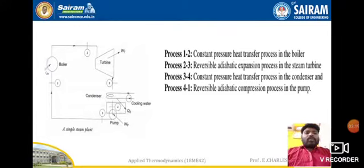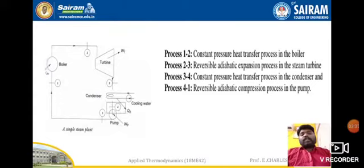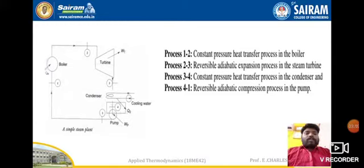The 2 to 3 process is a reversible adiabatic expansion process in the steam turbine. Reversible means the process can return to its original state, and adiabatic means there is no heat transfer from the system to the surroundings — that is, no heat transfer from the turbine to surroundings. It is an expansion process.